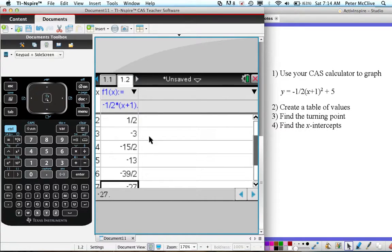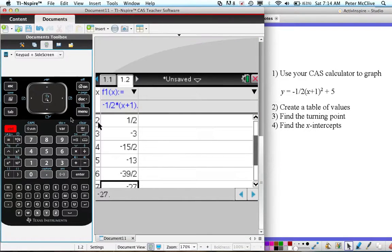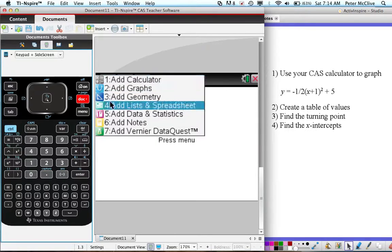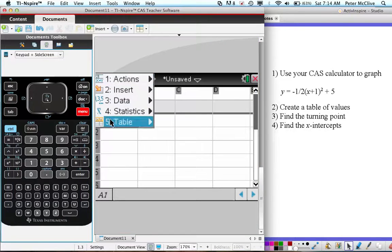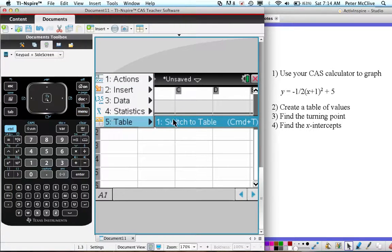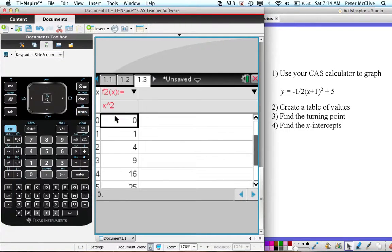Just for the practice, let's insert another page and get a table of values for the graph of y equals x squared. Again, control doc for a new page, we'll add another list and spreadsheet, so there's our 1.3 page. Now menu, 5 table, 1 switch to table, and I want to pick f2 this time. This is my graph of y equals x squared or function 2 of x equals x squared, and again table of values. We've done that, we've done number 2.